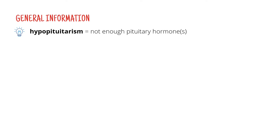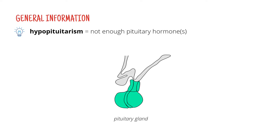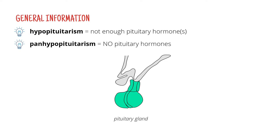Hypopituitarism is a condition when there's not enough of a pituitary hormone or even hormones. Pituitary hormones, as you of course know, are hormones produced by the pituitary gland, such as the growth hormone, prolactin, luteinizing hormone, etc. If there are no pituitary hormones, then we talk about panhypopituitarism. Pan is a Greek prefix which means all, so we talk about the loss of all hormones.